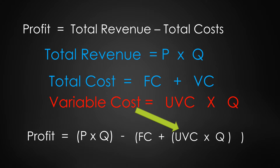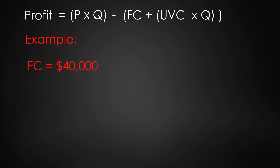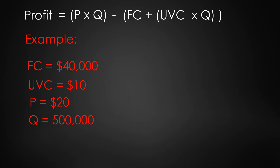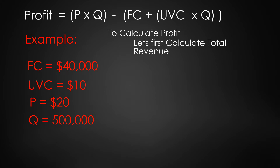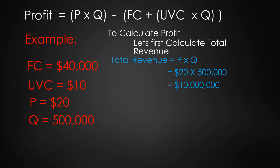Let's see how this works with an example. Fixed costs are $40,000, unit variable cost (UVC) is $10 per unit, the selling price P is $20 per unit, and we sell Q equals 500,000 units. Total revenue is P times Q — $20 times 500,000 — giving us $10,000,000.